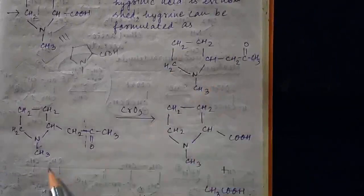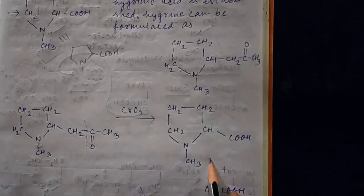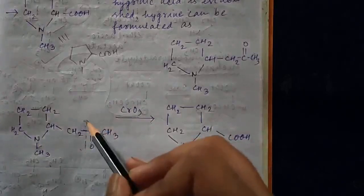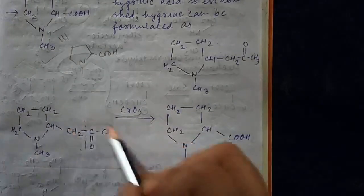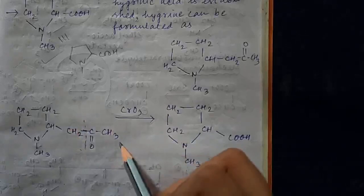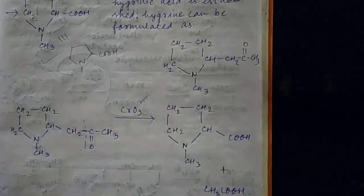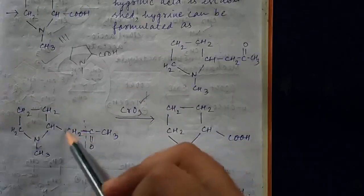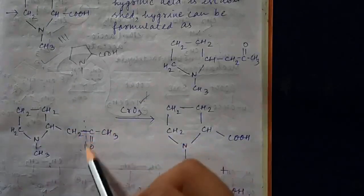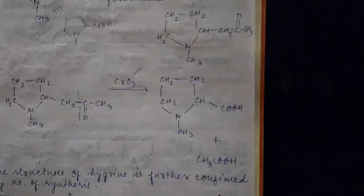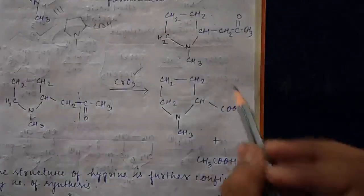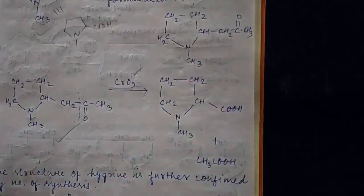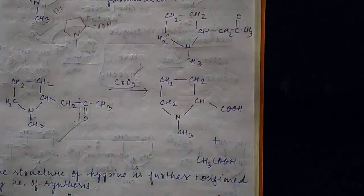Next we can see how hygrine converts into hygrinic acid. When treated with CrO3, this part forms a ketone system. The oxidizing agent acts on the ketone, converting it to carboxylic acid. This part breaks and converts into COOH, and this part also converts into COOH. Once hygrine structure is confirmed, we can suppose this is the structure of hygrine.